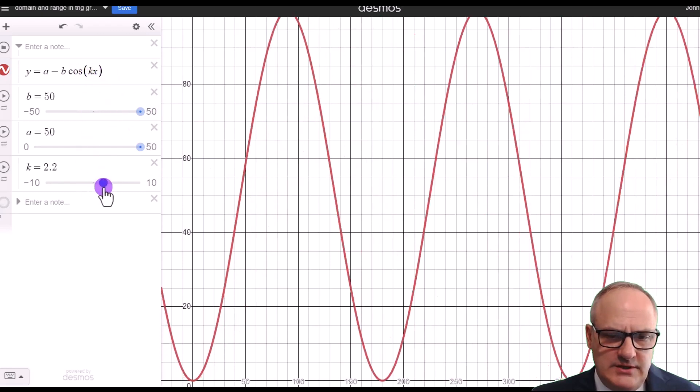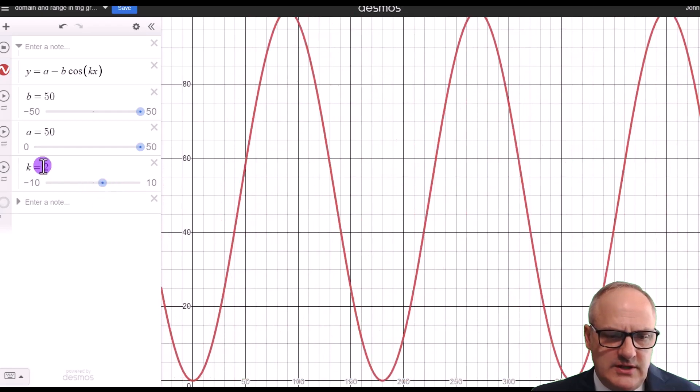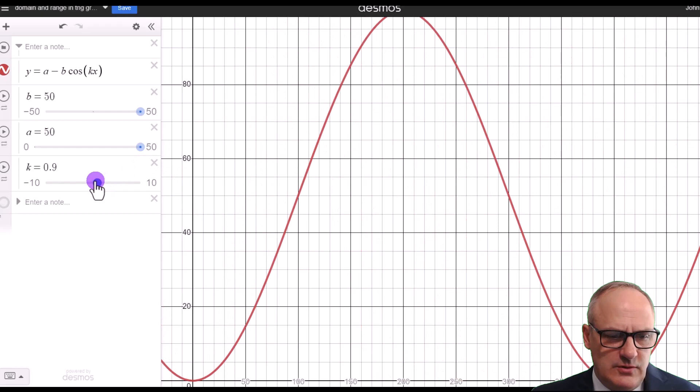And what k does is k squashes it up. So if you make it 2 times, k is 2, you get two times the number of oscillations in the same distance. So normally by the time we get to 360 here, we would have one oscillation. If we go to k is 1, we got one oscillation by 360.